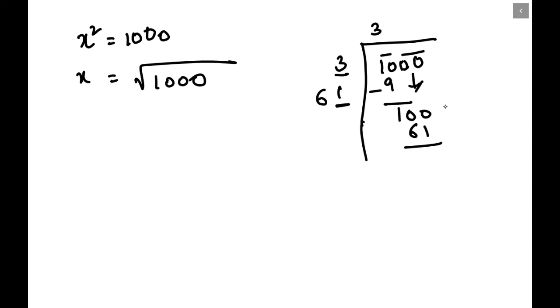Now if I subtract 100 minus 61, then I get 39. So whatever number I place here I have to place this in the quotient and this is the remainder I have got. So quotient is 31 and I have got remainder. That means this thousand is not a perfect square.